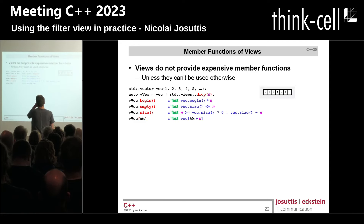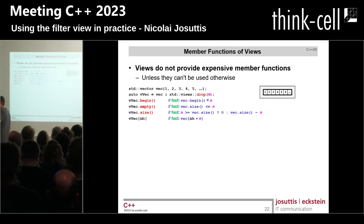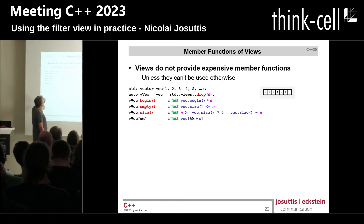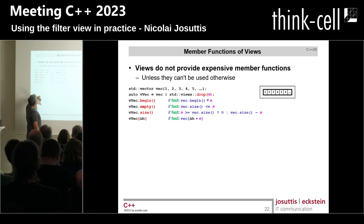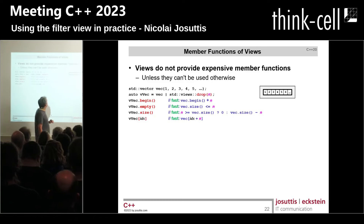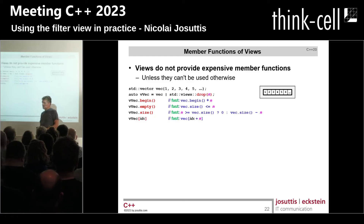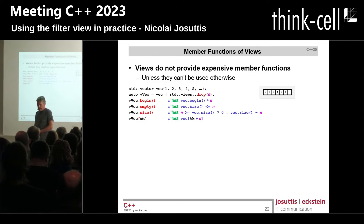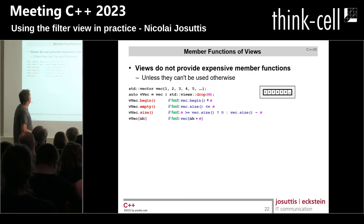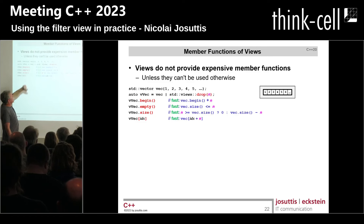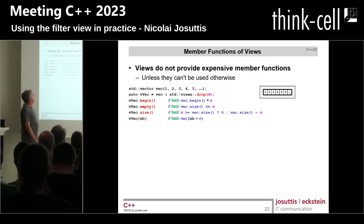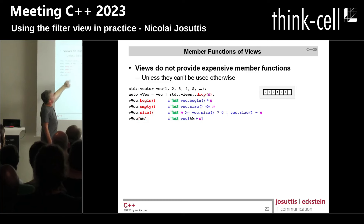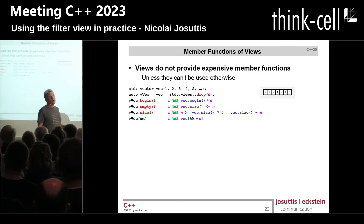When we have a vector with a drop view, calling begin, empty, size, and the index operator are all cheap — constant time regardless of element count. For a list with drop, begin is expensive — linear — but empty and size are fast because a list has a size member. The index operator on a list is slow because we must iterate to the Nth element.